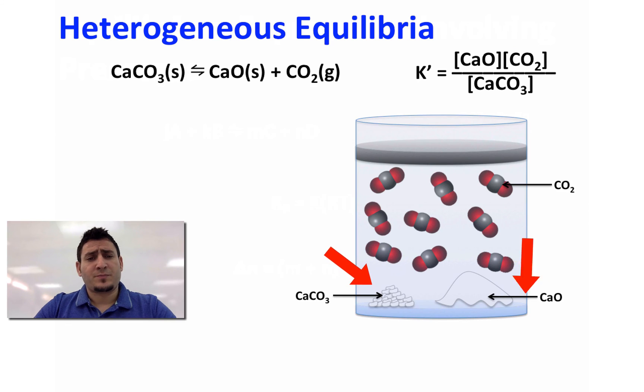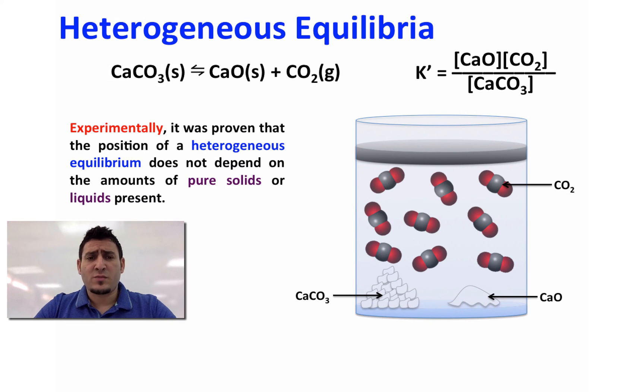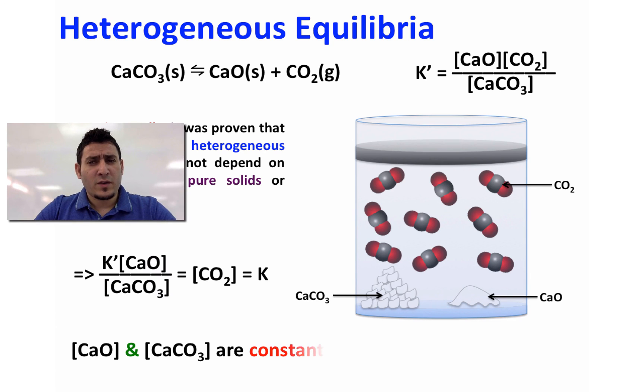Now experimentally it was proven that the position of a heterogeneous equilibrium does not depend on the amounts of pure solid or liquids present. So therefore the concentrations of CaO and CaCO3 are constant and therefore we can rearrange the expression of the equilibrium constant to be only equal to the concentration of CO2. Also, note that the Kp expression is equal to pressure of CO2 only.